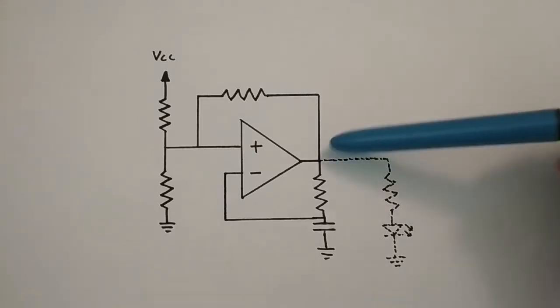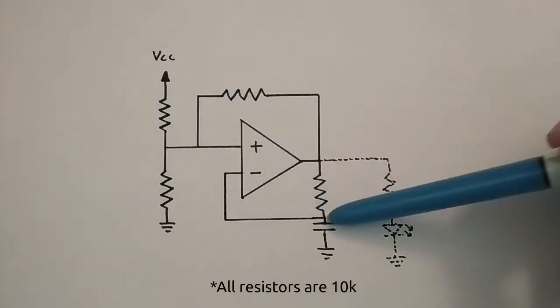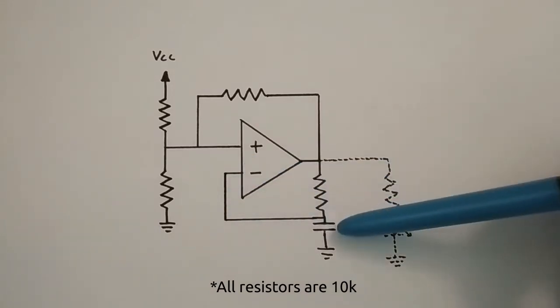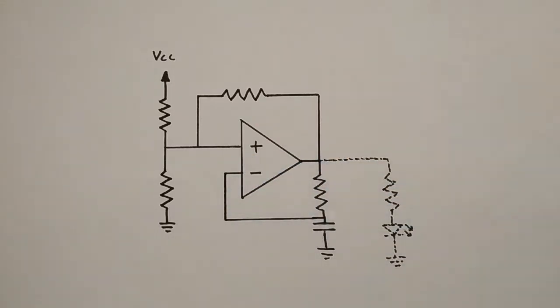That's where this circuit comes in. It combines positive feedback and negative feedback that gets delayed by a capacitor that has to get charged through a resistor.